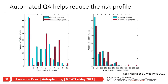A slide from Kelly Kisling shows the impact of introducing automated QA into an automated workflow. If you have something like the RPA doing automatic contouring and planning, and then add automated QA to verify plans and contours, what's the impact on the risk profile? The figure on the left shows the number of failure modes by detectability score—a score of one means very detectable, hence low risk. Without the QA program, there are quite a few high detectability scores (hard to catch). With the QA program, that goes down, and the number of high risk priority numbers also decreases significantly.